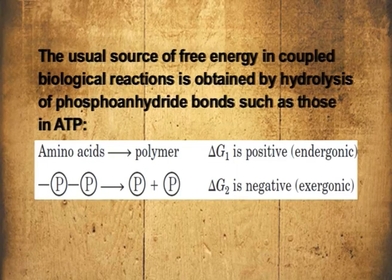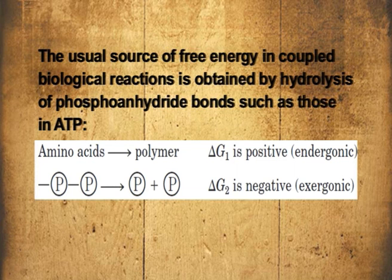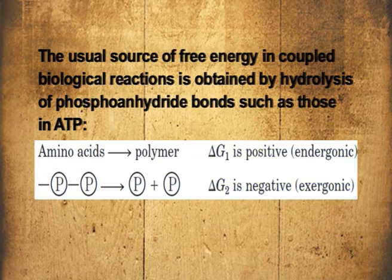Since these processes occur in aqueous medium, the loss in entropy is more than compensated by the release of a large number of water molecules non-covalently associated with the monomeric units. To compensate for the free energy deficit, cells couple these polymerization reactions to other reactions that liberate free energy so that the overall free energy change is negative. The usual source of free energy in coupled biological reactions is the hydrolysis of phosphoanhydrate bonds such as those found in ATP - an exergonic reaction coupled to the endergonic condensation polymerization.